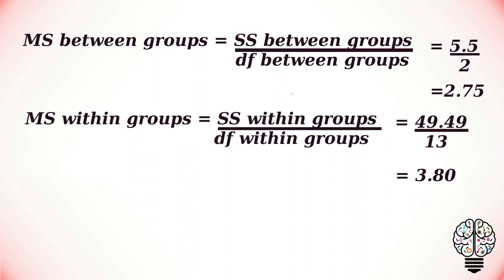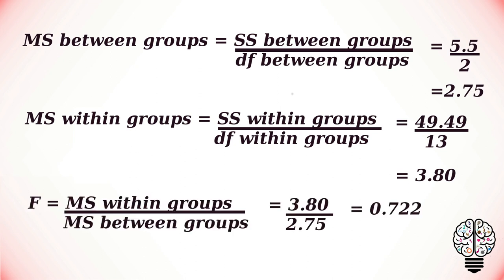Finally, we have to calculate our F value by dividing the mean of squares between groups by mean of square within groups. And with that we get our F value as 0.722.